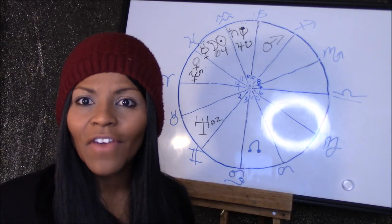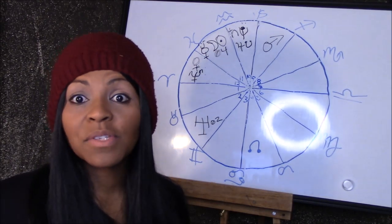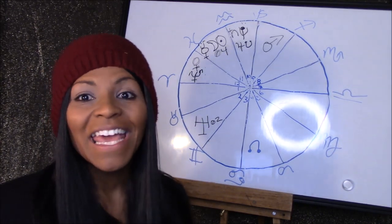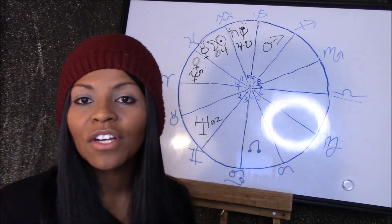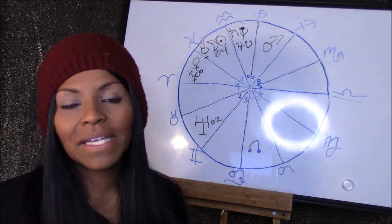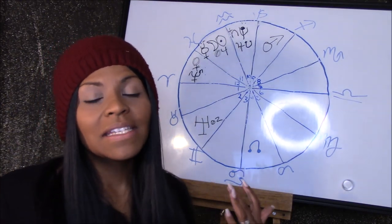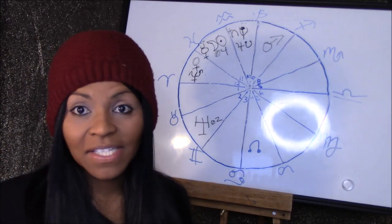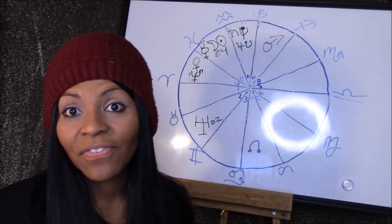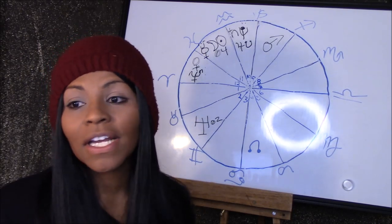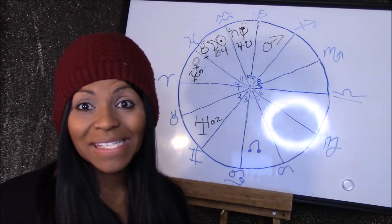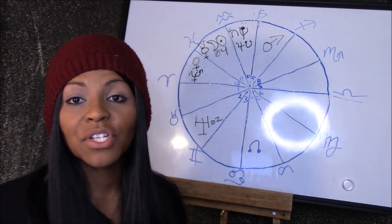First and foremost, this is at four degrees in 22 minutes of Aquarius, so people who have placements between about zero degrees and eight degrees of any of the fixed signs—Aquarius, Taurus, Leo, or Scorpio—if you have prominent placements at these degrees in your chart, you'll definitely want to see what's happening.